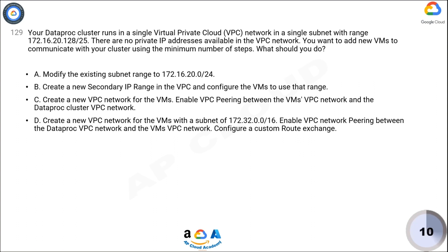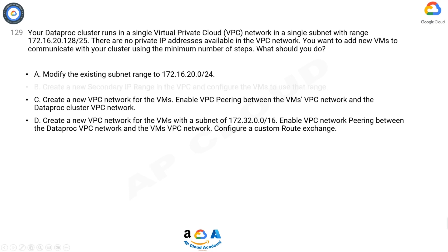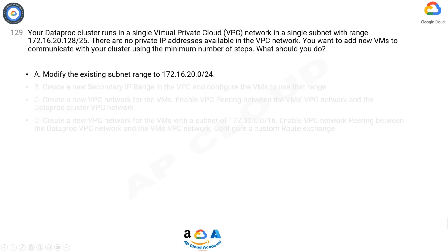Now take 10 seconds to think about the answer. The correct answer is A: Modify the existing subnet range to 172.16.20.0/24.